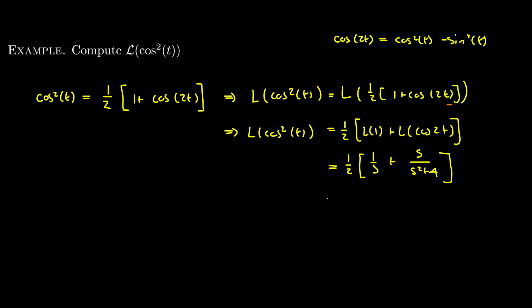Reading directly from the table, the Laplace transform of 1 is 1/s, and the Laplace transform of cos(2t) is s/(s² + k²) with k = 2, so s/(s² + 4). Therefore we get ½ × (1/s + s/(s² + 4)), which simplifies to (s² + 2)/(s³ + 4s). This again shows that using our table and linearity we can calculate Laplace transforms of functions that don't appear directly in the table.